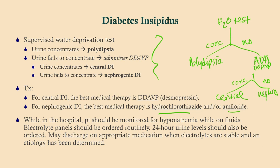For central DI, the medical treatment is DDAVP — you're simply giving what worked during the test. For nephrogenic DI, we give hydrochlorothiazide and/or amiloride — yes, a diuretic for someone peeing too much, counterintuitive but memorize it. Monitor admitted patients' serum sodium closely. With hypo- and hypernatremia, symptoms overlap considerably — mostly altered mental status — unlike hyper- and hypocalcemia. Presentations can be non-specific or even asymptomatic, so labs are essential and these findings are often incidental.